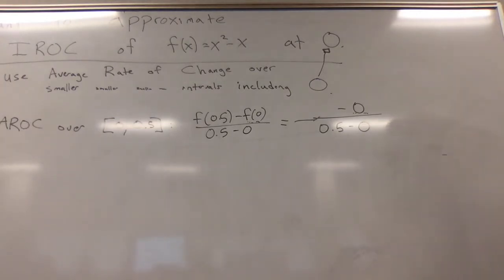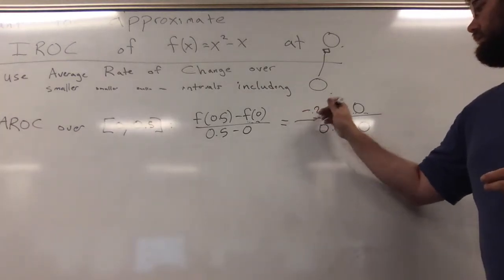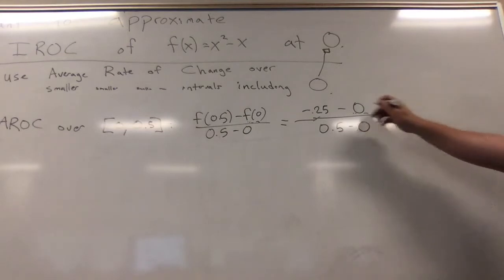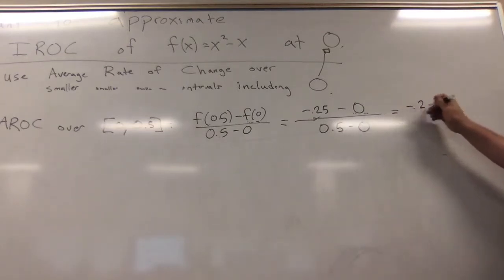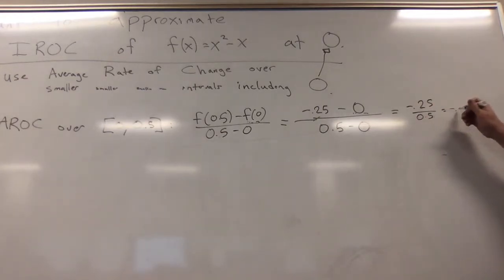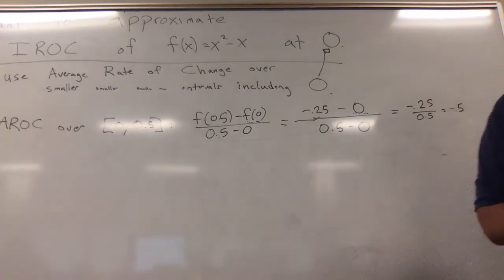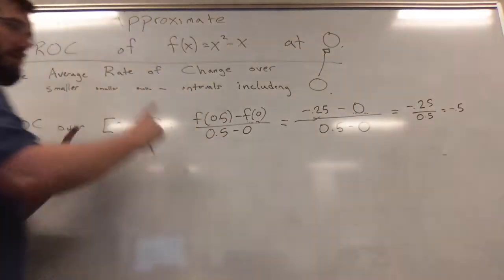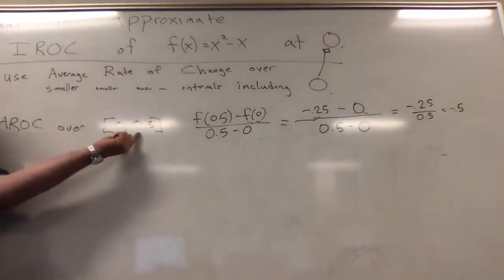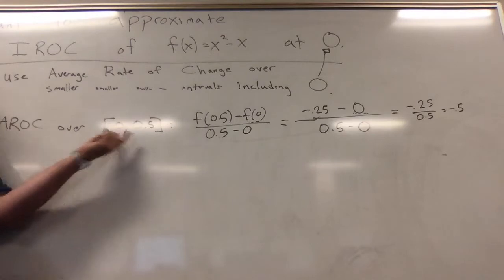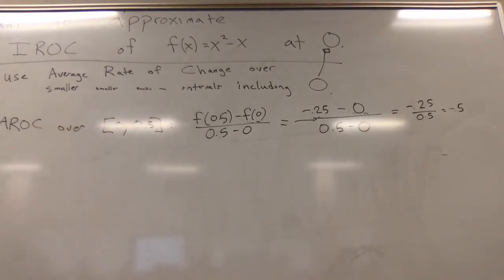f(0.5) is negative 0.25. So we can do the minus 0 business: negative 0.25 over 0.5, which is negative 0.5. Now that's a decent approximation but this is still a pretty big interval. To get a better approximation we want a smaller interval.